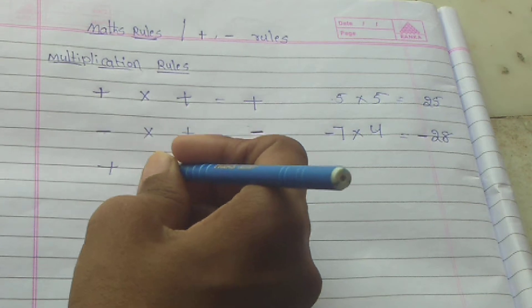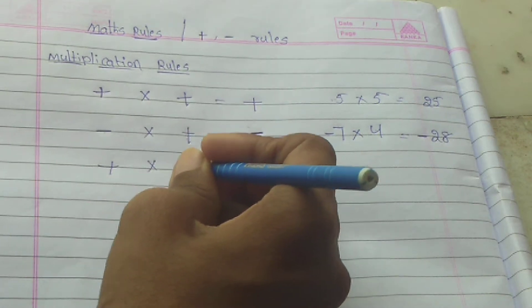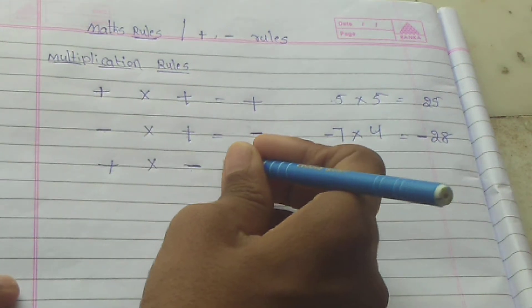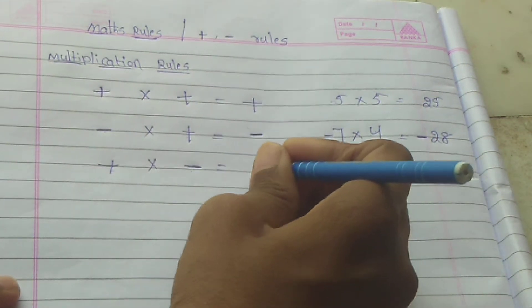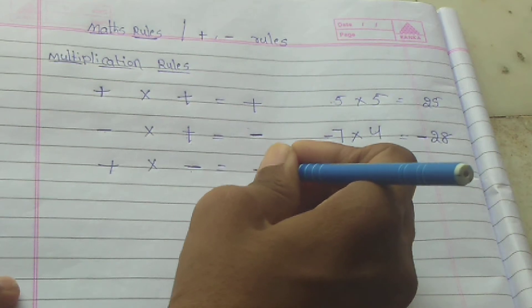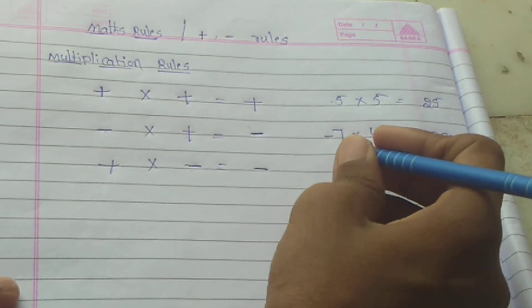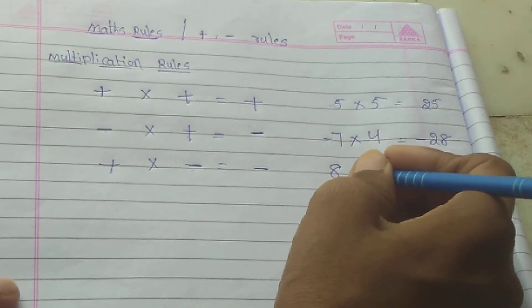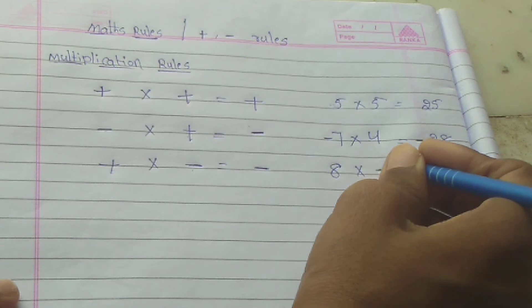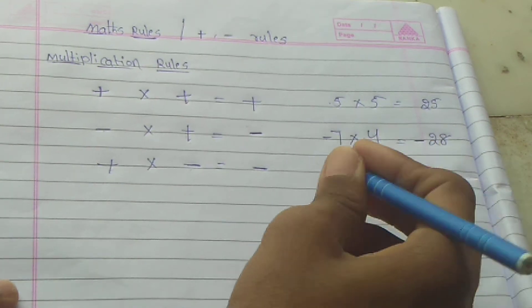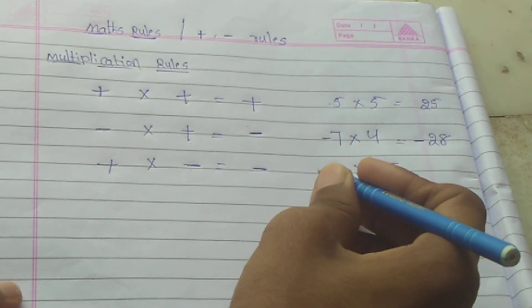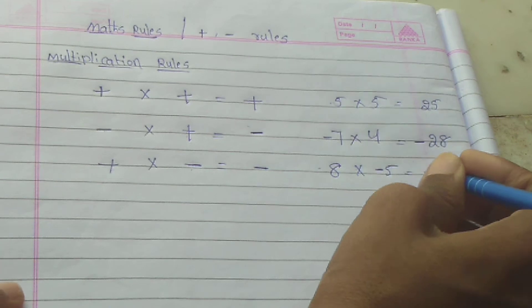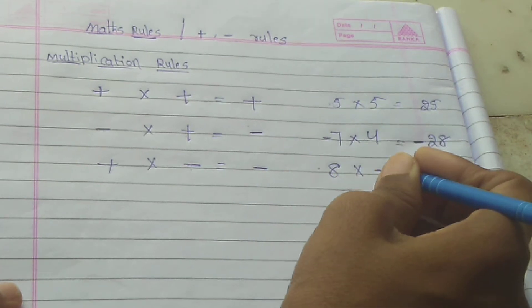Next: plus into minus. One plus number and one minus number — the answer is negative. That means plus into minus gives a negative result.